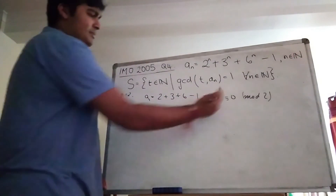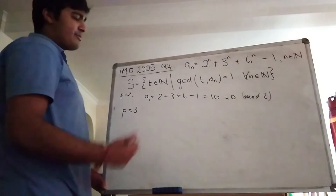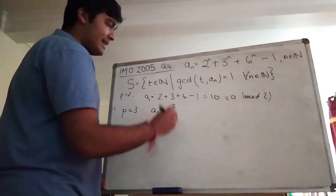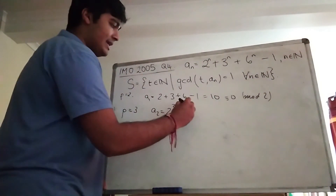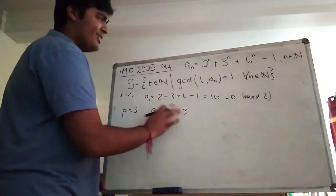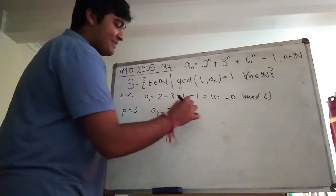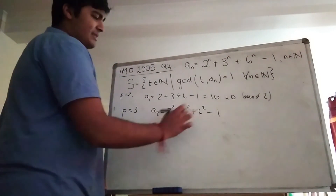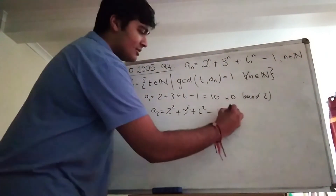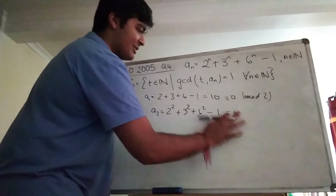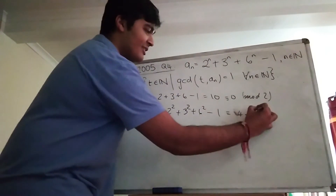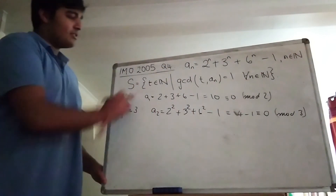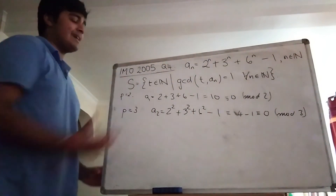Now let's look at p equals three. Obviously ten is not a multiple of three, so let's look at a₂. That's 2 squared plus 3 squared plus 6 squared minus one. These two terms — 3 squared and 6 squared — are clearly multiples of three. So this is just congruent to 2 squared minus one, which is four minus one, which is obviously zero mod three. So p equals three is not in S.